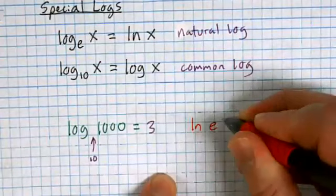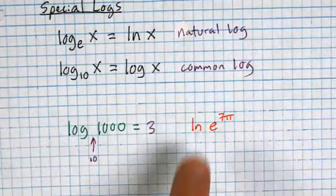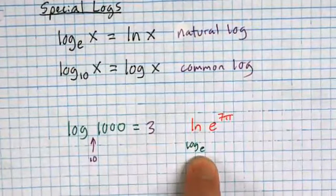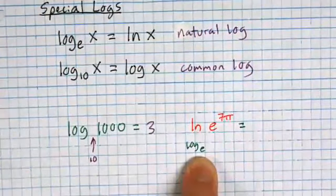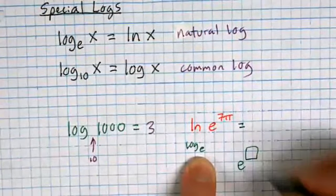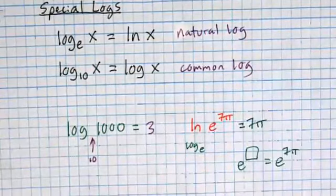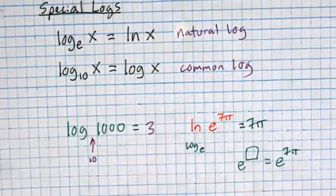We can get fancier with ln of e to the 7.5. What I'm really asking is: what is the exponent — because it's a log — that I could put onto a base of e to make it e to the 7.5? The answer is 7.5. The ln and the e cancel each other out.